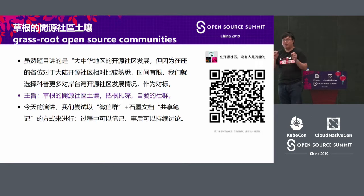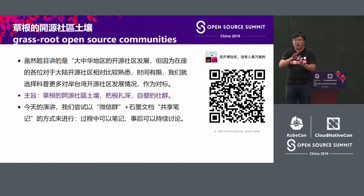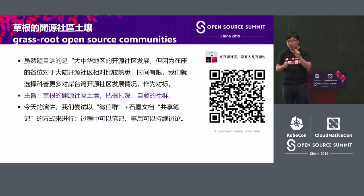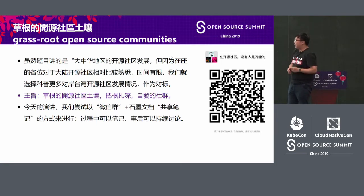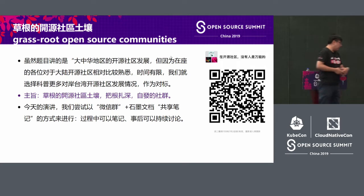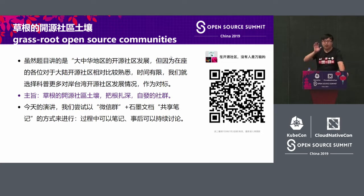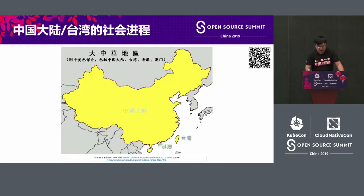You can see that in the China region the open source community has been developing, but you may not know much about Taiwan's open source community. For friends from other countries, if you want to find out more about Chinese mainland's open source community, you can talk to me or other friends here after the presentation. My topic is: grassroot open source community — they have to grow and grow their roots deeper, and this is a voluntary community.